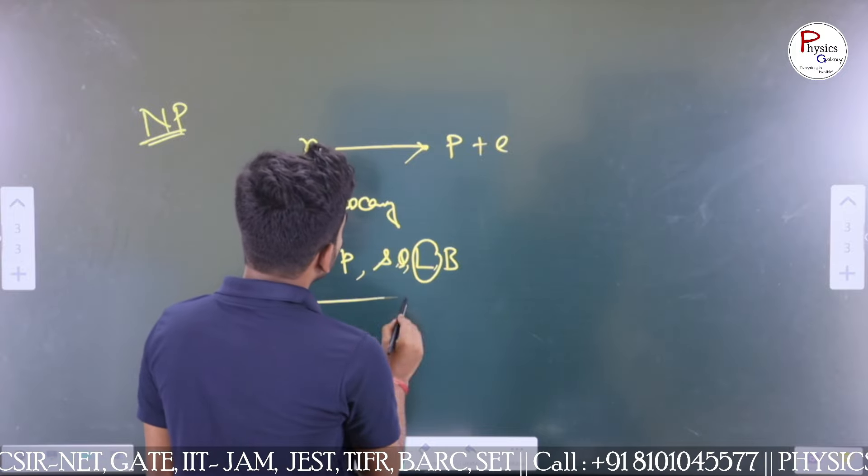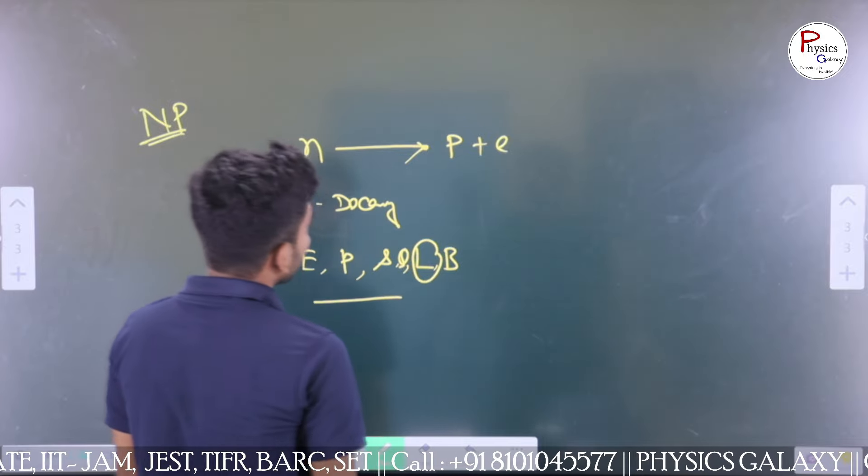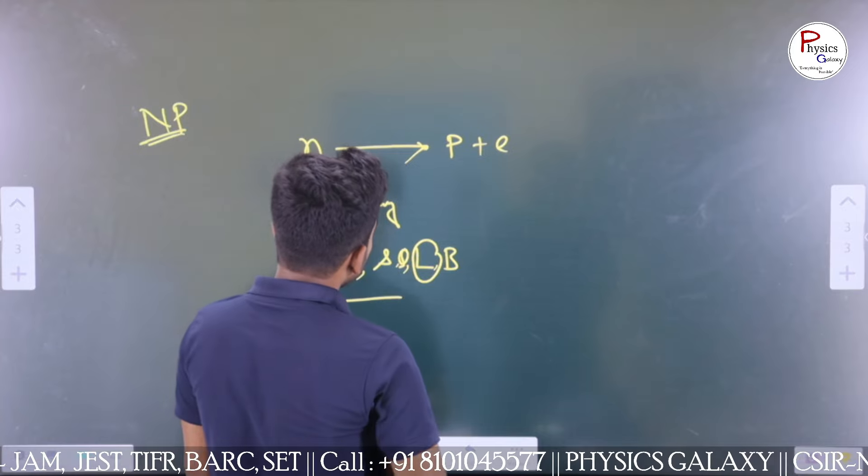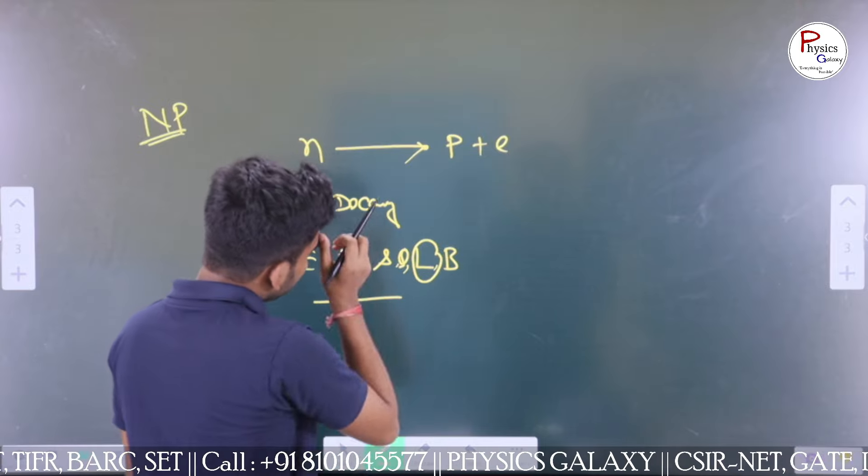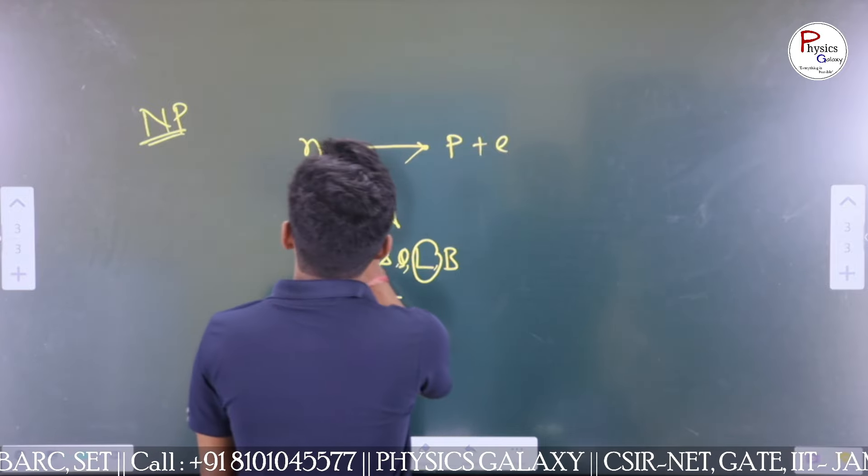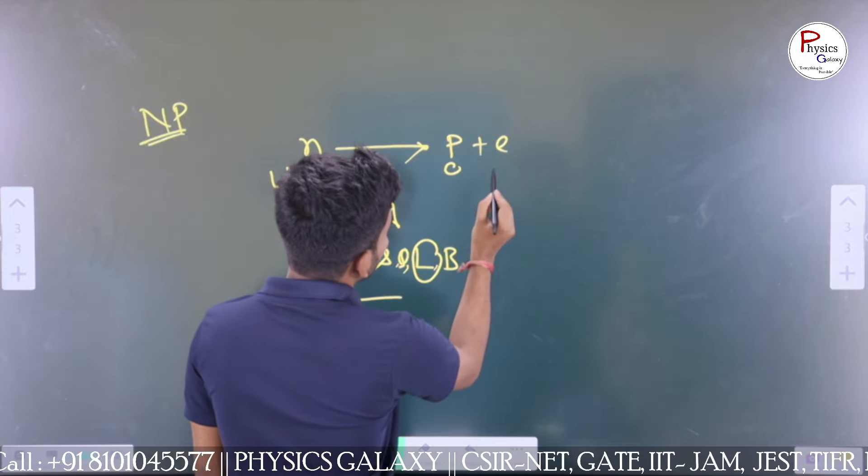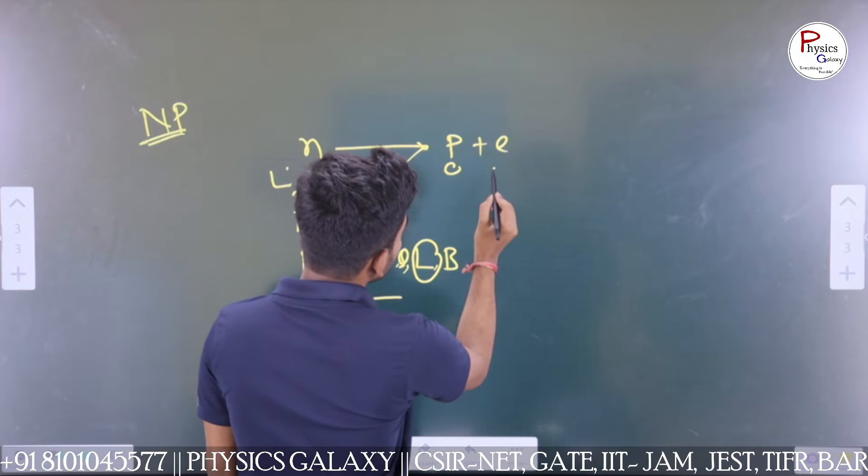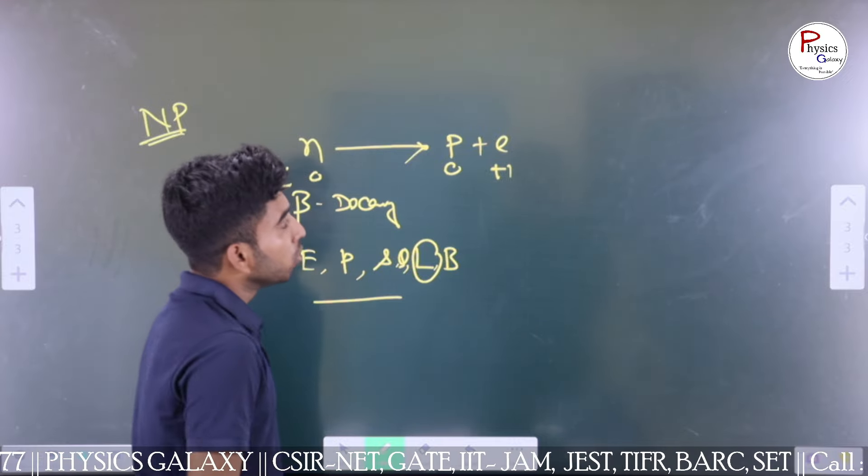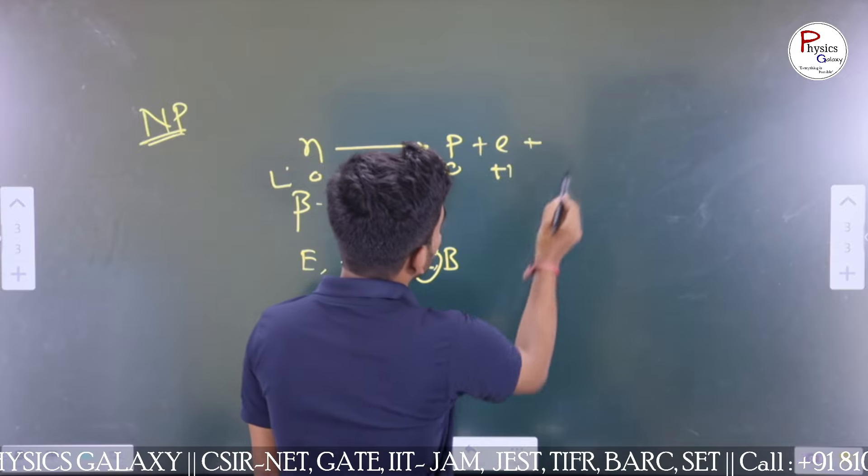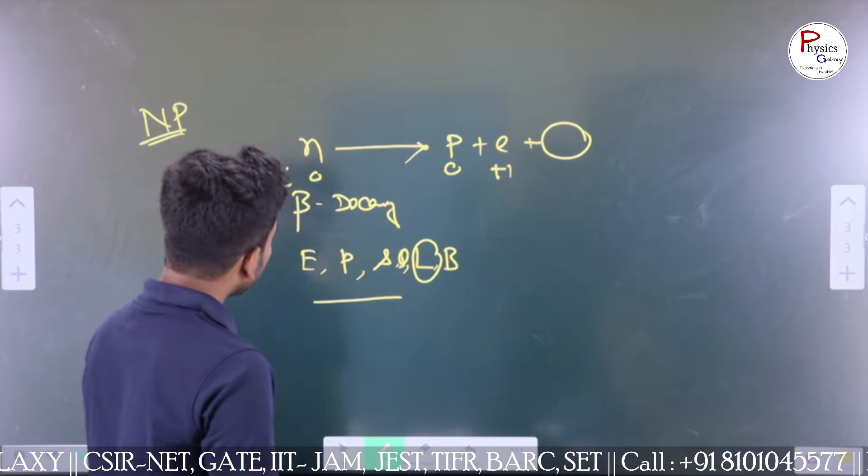Except lepton number, the other quantities were conserved. If we check the lepton number, then lepton number wise it is not conserved because the proton is a baryon, so here lepton number is zero. Proton is a baryon, so here zero. But electron has lepton number plus one. To maintain and conserve the lepton number, we have to add some extra particle in this reaction.